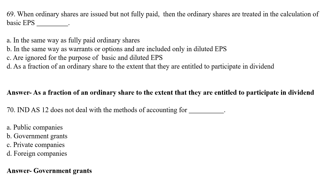Indian AS 12 does not deal with the method of accounting for — Option A: public company, Option B: government grants, Option C: private companies, Option D: foreign companies. The correct answer is Option B — Government Grants. Indian AS 12 does not deal with the method of accounting for government grants.